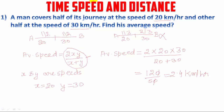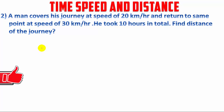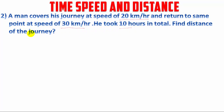Now we move on to our second question. Please click on the like button below to see more videos like this. The second question is: a man covers his journey at the speed of 20 km per hour and returns to the same point at the speed of 30 km per hour. He took 10 hours in total. Find the distance of the journey.